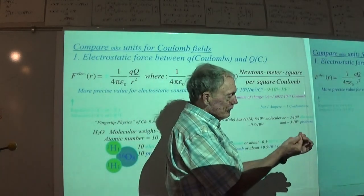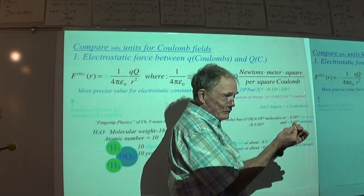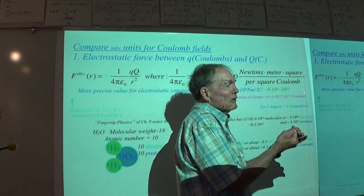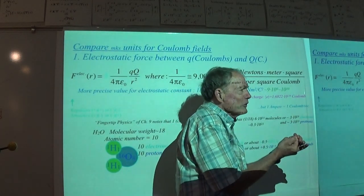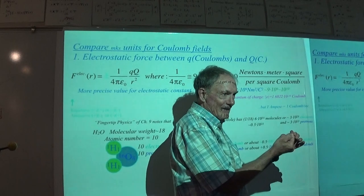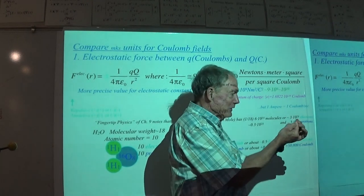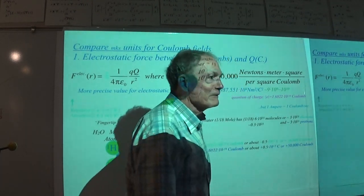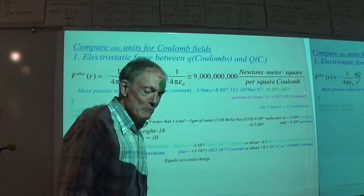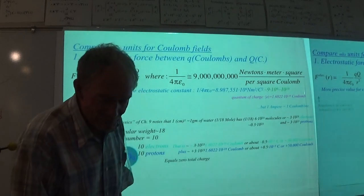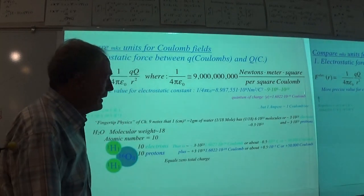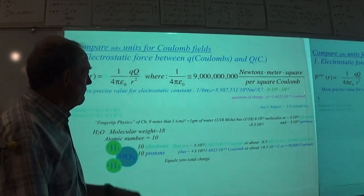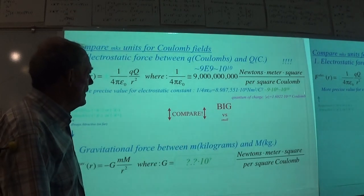Fifty thousand coulombs in your fingertip — so you're fighting with fifty thousand minus coulombs to make your finger stable, so you don't blow up your manicurist. That gives you some feeling for what's going on.